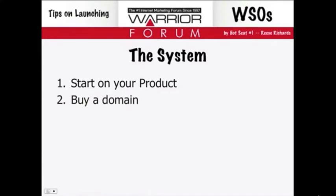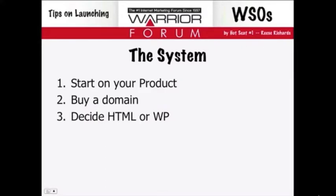Once you've thought of the product and have a cool name, go out and buy a domain name. For example, one of my products was called FB University, so I went and bought FB-University.com. Then decide whether you're going to go HTML-based or WordPress. If you're going WordPress, you should know what kind of theme you're going to use. If you're going HTML-based, you should know HTML or CSS, or have a template you can base it off of.